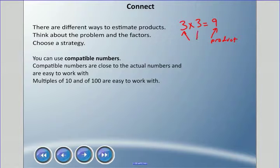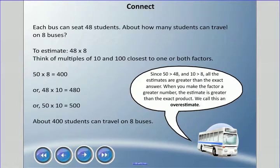The two numbers that we're multiplying are called factors. We're going to think about the problem and the factors, choose a strategy. The first one we're going to do is using compatible numbers. Compatible numbers are close to the actual numbers and they're easier to work with. Multiples of 10, 100, 1000 are easier to work with, so they're a good starting point.